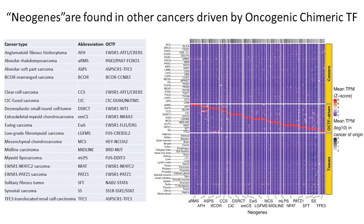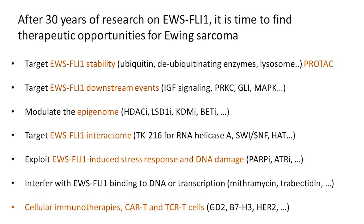To conclude quickly — I began with the circle plot showing many different translocations, many of which lead to fusion transcription factors. Interestingly, we did the same kind of analysis for tumors of this type, and indeed in each case those chimeric transcription factors may have neomorphic properties and lead to this kind of neogene formation. For each of those tumors shown on the x-axis, you have very specific neogenes that are expressed.